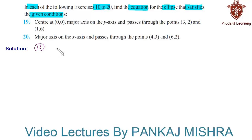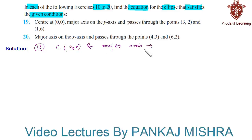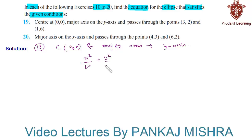In question 19, we are given that the center of the ellipse is at the origin and the major axis is along the y-axis. This implies that the equation of the ellipse will be of the form x² over b² plus y² over a² equals 1 — let us call it equation 1.